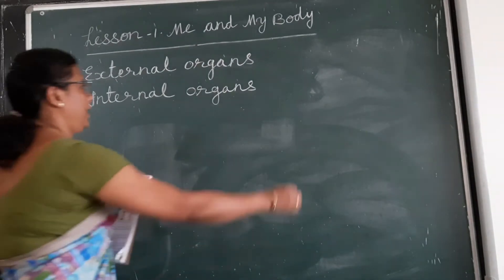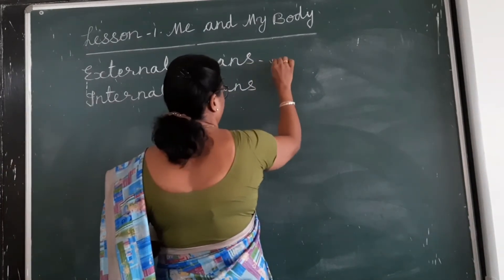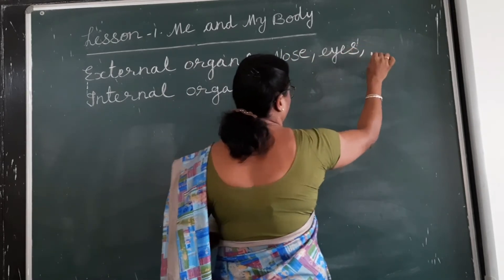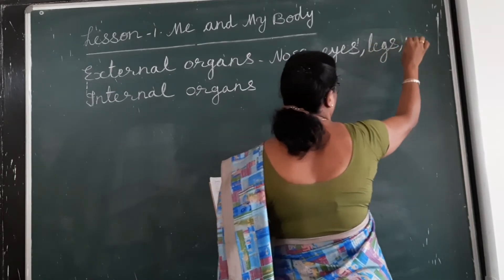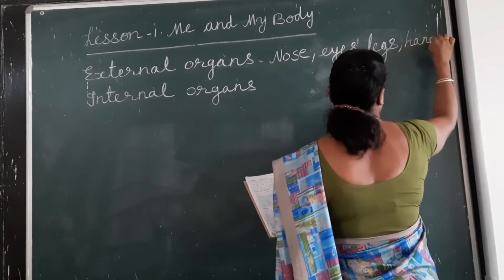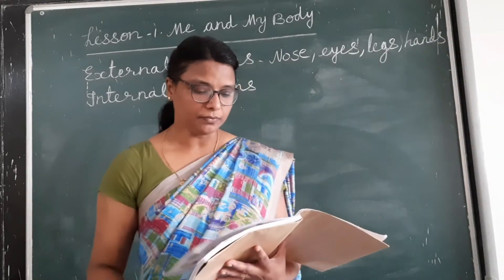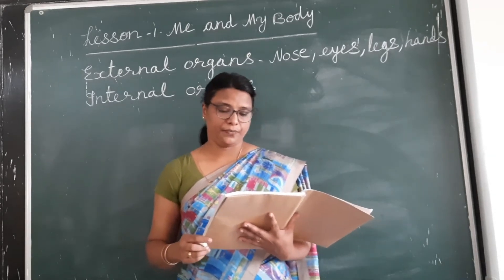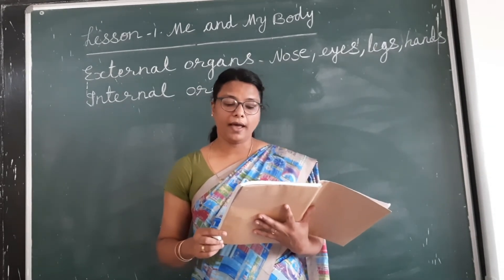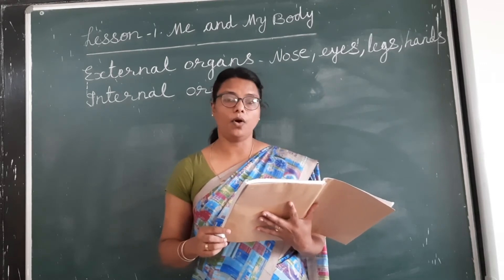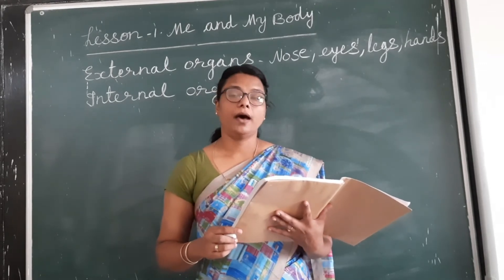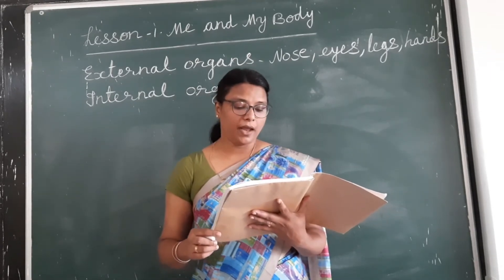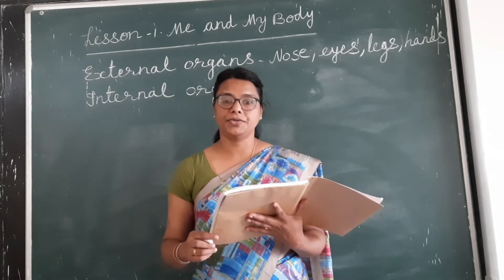For example, external organs include nose, eyes, legs, hands, etc. Hands enable us to eat, hold and write. Legs enable us to stand, walk and jump.